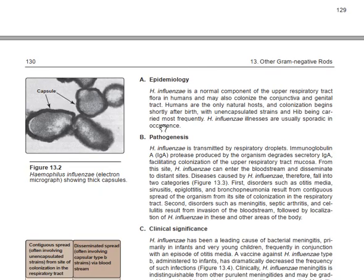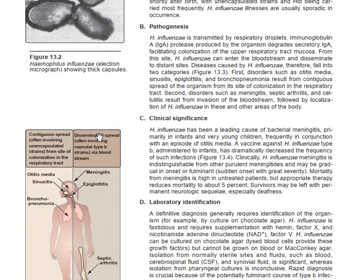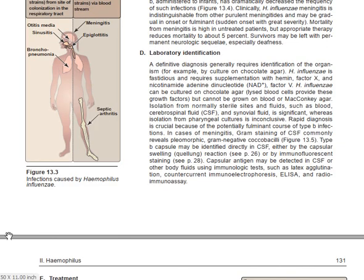We start with the first one, which is Haemophilus. This diagram shows an electron microscopy view of Haemophilus influenzae. The virulence factor of Haemophilus influenzae is that it contains capsules, and it shows the thickness of those capsules.